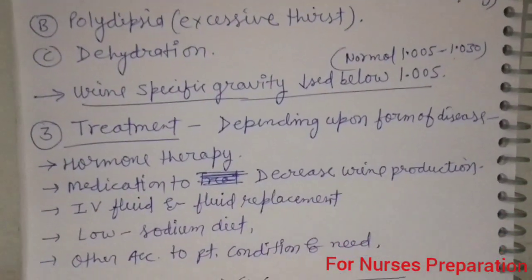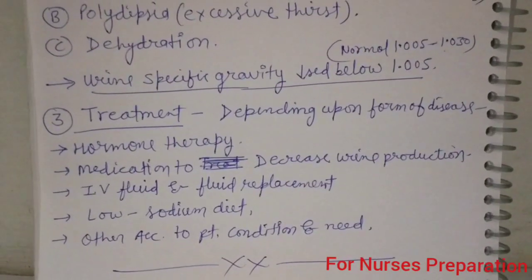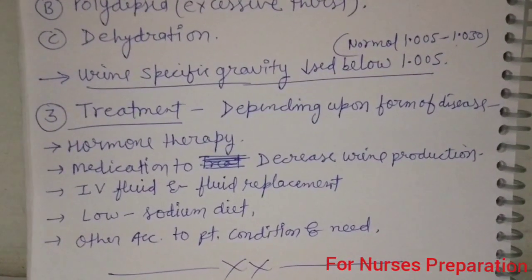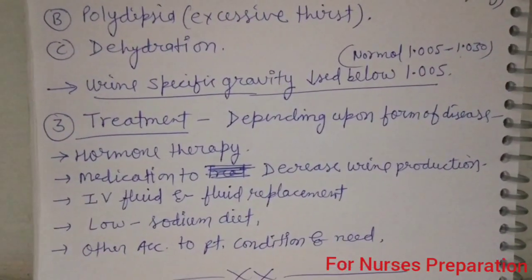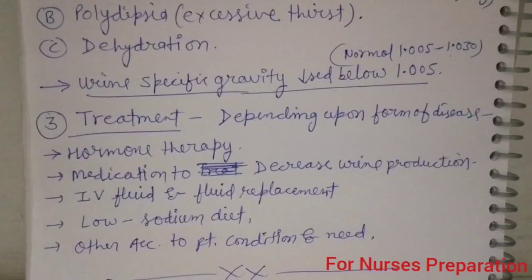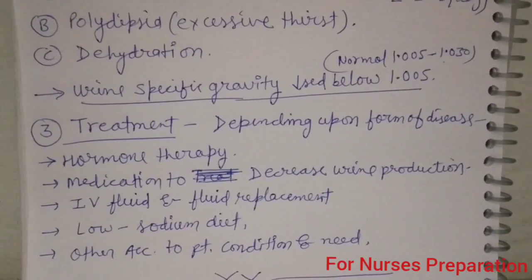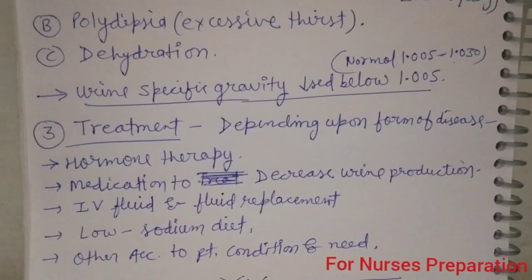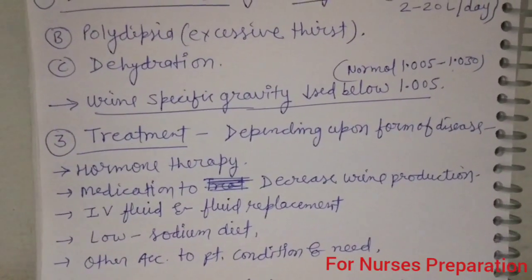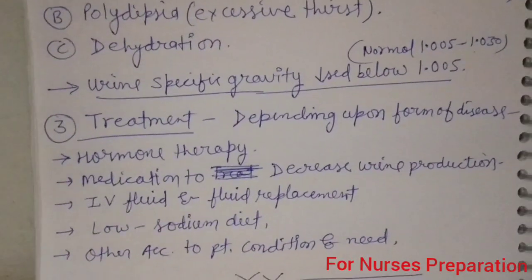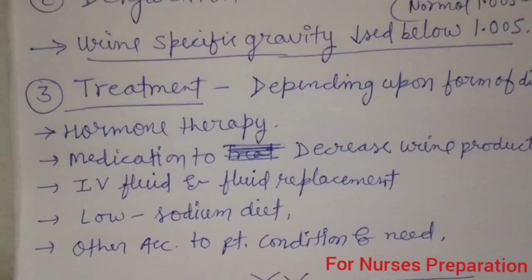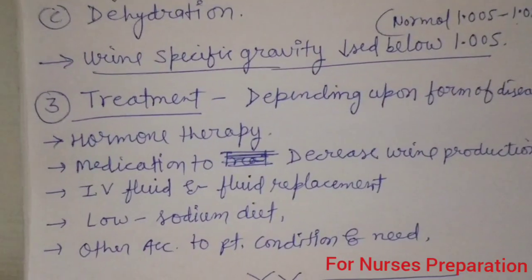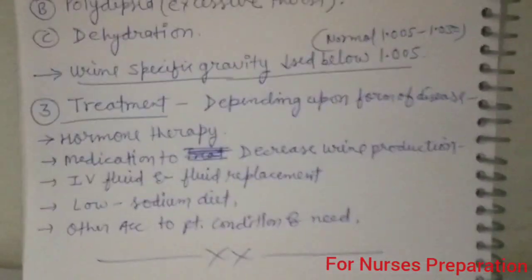Now let's talk about the treatment of diabetes insipidus. Depending upon the form of disease, as we know this disease is due to ADH hormone deficiency, hormone therapy is useful. Medications are used to decrease urine production. IV fluids and fluid replacement are given because the person is having dehydration due to excess urine output. A low sodium diet is recommended to maintain blood pressure, and other medications are given according to the patient's need.